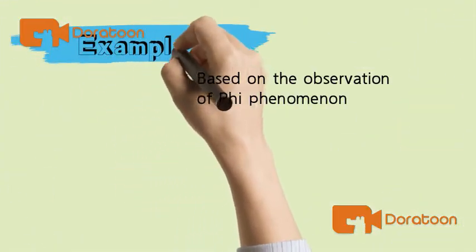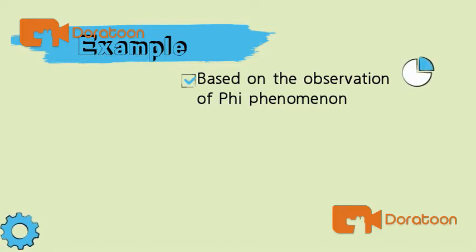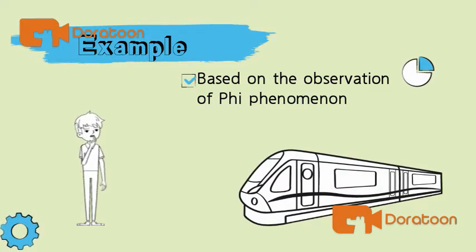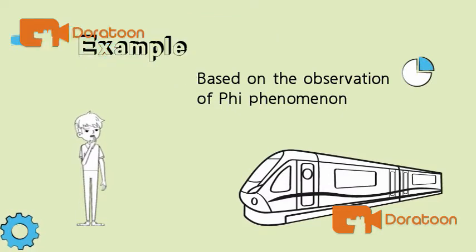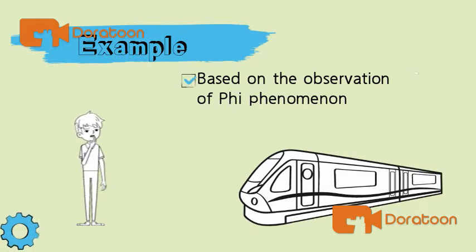Based on the observation of the phi phenomenon in the example of blinking lights at a train station, the whole we perceive is that one light appears to move quickly between two points. The reality is that two separate lights are blinking rapidly without moving at all.